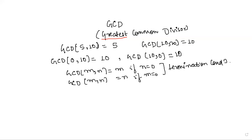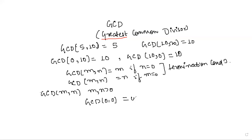There is one more thing — we have to understand the limitations. In GCD, we can find GCD(m, n) only if both m and n are greater than zero. So if you see a problem like GCD(0, 0), you can say it is undefined, because this condition is not valid — both values equal zero.